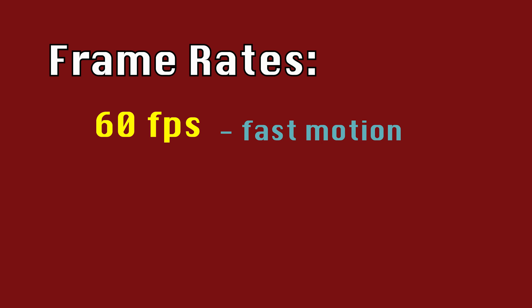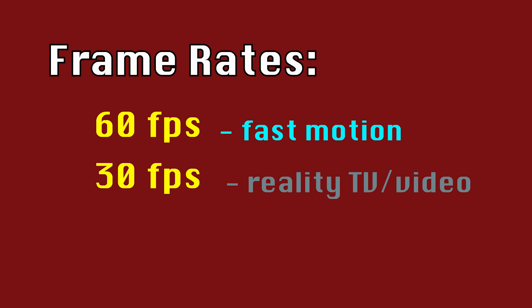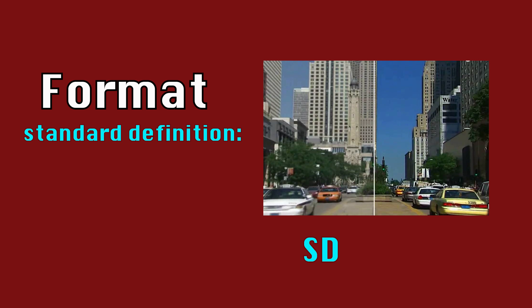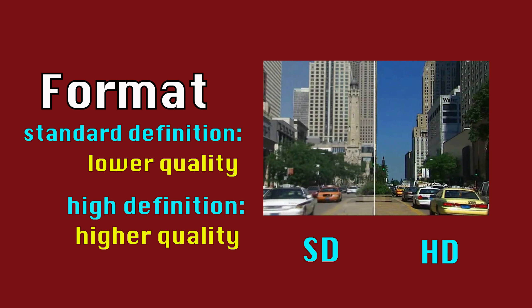In order to utilize these skills, you'll first need to understand how to actually work a camera. There are three frame rates you typically work with: 60 frames per second is used for fast motion shots; 30 frames per second is the quality of reality TV or home movie type footage; and 24 frames per second is the standard frame rate for normal films. It's important to always apply the right frame rate for your video when recording. Format is also important because it controls the quality of your footage — SD or standard definition is lower quality than HD or high definition.